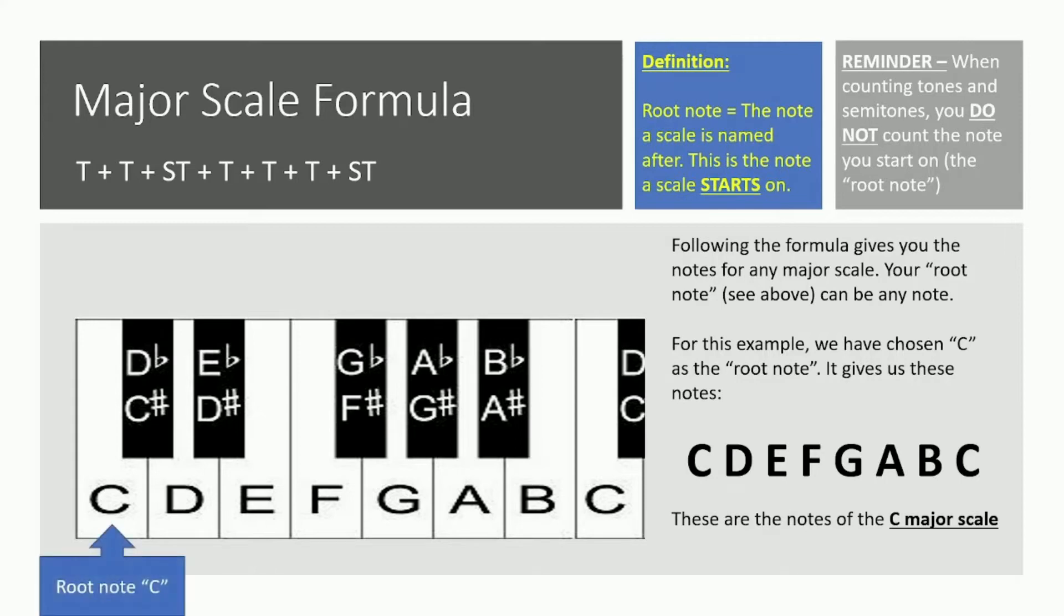And this is how we found it. We started with the root note C. Then we jumped from C to D a whole tone. You can see we're following the formula that's underneath the title major scale formula. We went up a tone first, a T. What's next? Another tone, the big T. Then that takes us from D to E up two semitones.